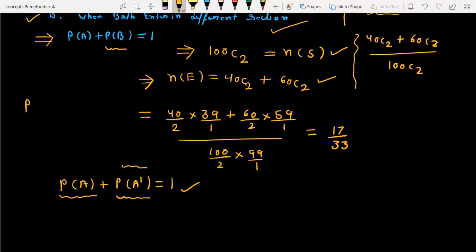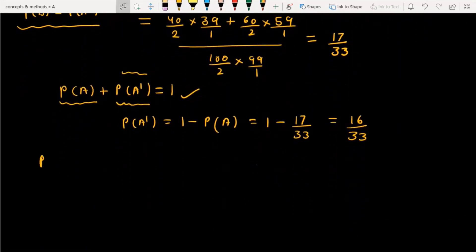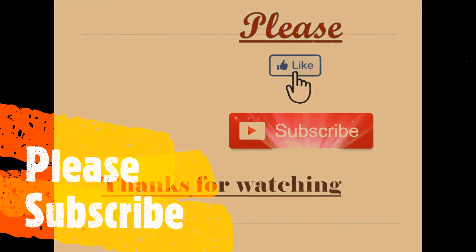So P(B) or P(A') is equal to 1 minus P(A), which equals 1 minus 17/33, and this is equal to 16 upon 33. That is the answer of P(B).